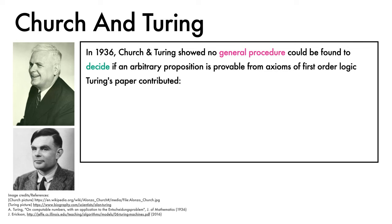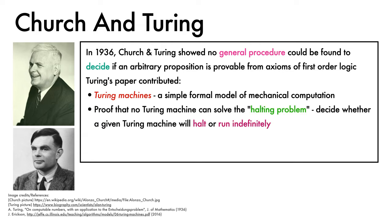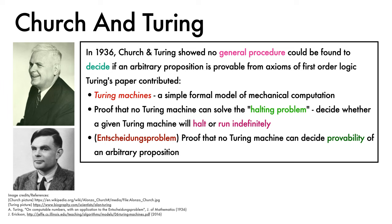The paper from Turing, who was aged 23 at the time, provided several key results. First, a very simple formal model for mechanical computation that has come to be known as Turing machines. Second, proof that no Turing machine can solve the halting problem — that is, to decide whether a given arbitrary Turing machine will halt or run indefinitely. Third, his negative answer to the Entscheidungsproblem: a proof that no Turing machine can decide the provability of an arbitrary proposition.